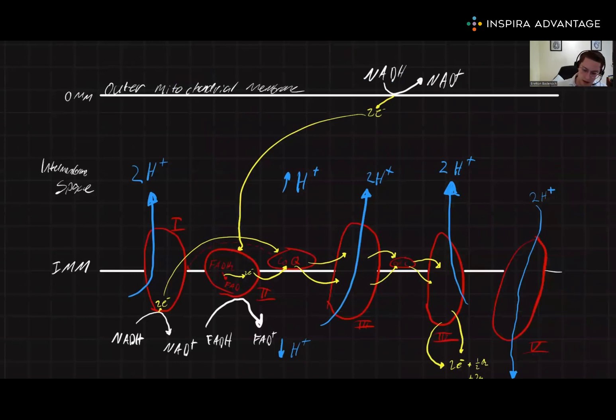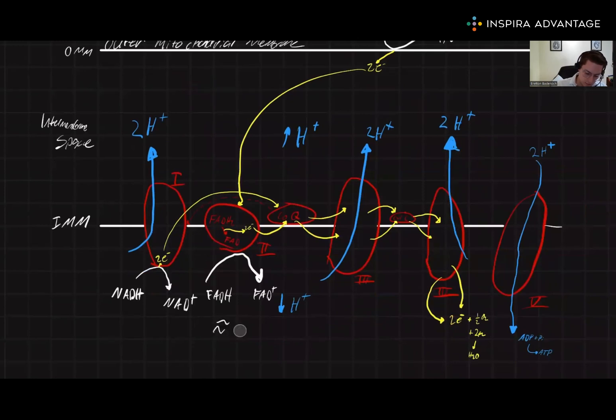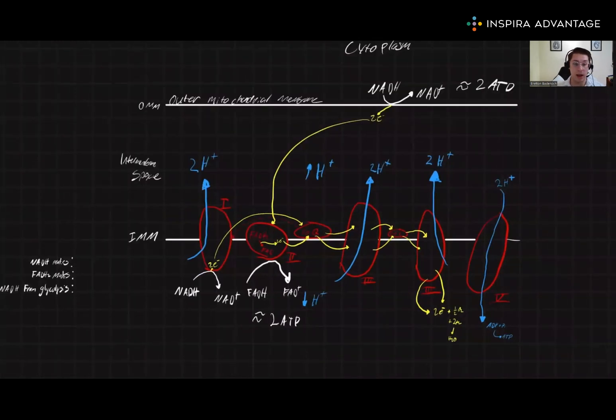The NADH coming from glycolysis is only going to be worth 2 ATP in the end, which is the exact same amount FADH is worth, compared to the NADH from inside the mitochondria, which is worth 3 ATP.